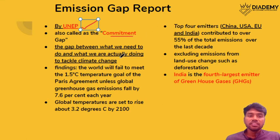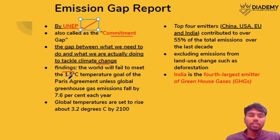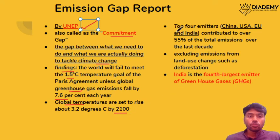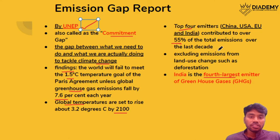The Emission Gap Report is given by UNEP and is also called the Commitment Gap Report. It determines where we stand with respect to the climate change target of limiting warming to 1.5°C. Findings show we cannot achieve this target unless greenhouse gas emissions are reduced by 7.6% each year. If present conditions continue, global temperatures will rise by 3.2°C by 2100. The top four emitters are China, USA, European Union, and India — contributing 55% of global greenhouse gas emissions. Notably, this report does not include emissions from deforestation or land-use change.